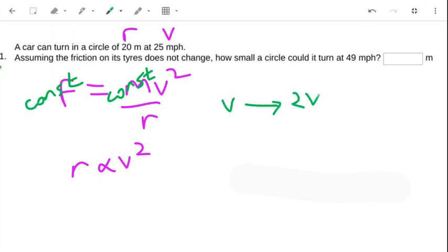So for example, if v doubles then r will multiply by 4. If v triples, r multiplies by 9.